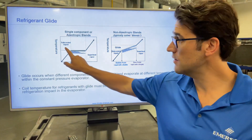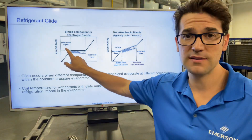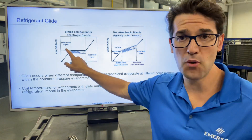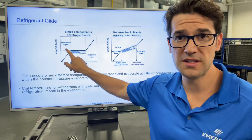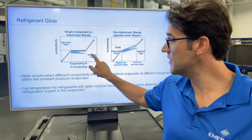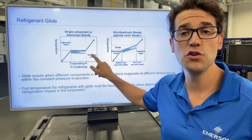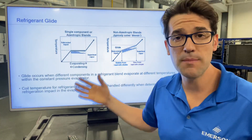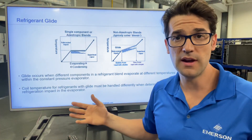For an example, it says liquid on this side — this is your bubble point on your enthalpy diagram. On this side would be your dew point, your vapor side.